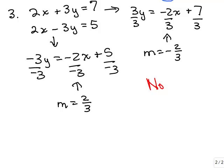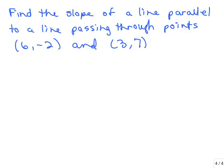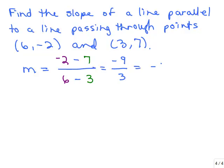If you've got 2 lines that have the same slope, then they're parallel. And if they're not exactly the same slope, then they're not parallel. What if you were asked to find the slope of a line parallel to a line passing through the points 6, negative 2 and 3, 7? Well basically, the slope of the parallel line will be the same as the slope of the line going through those 2 points. So we find the slope using rise over run: negative 2 minus 7 over 6 minus 3, which is negative 9 over 3, giving us a slope of negative 3. So the slope of a line parallel to that line is also negative 3.